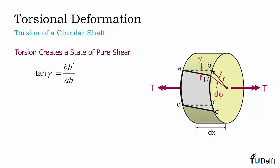Length B, B prime is the arc length swept by radius R through infinitesimal angle d phi, or R times d phi, and length AB is simply the width of our element dx.